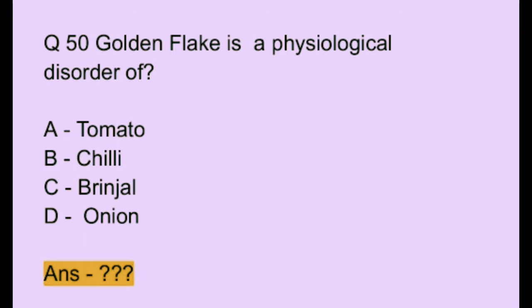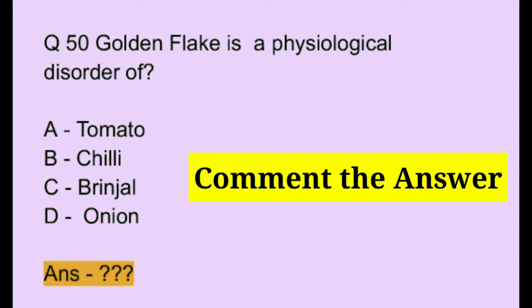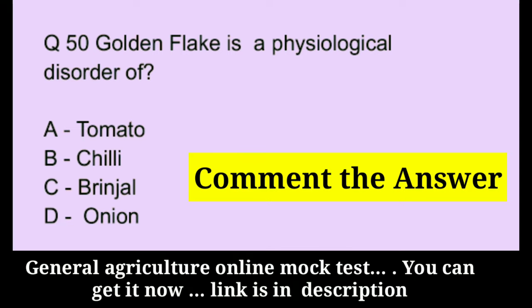Question number 50. Gold flake is a physiological disorder of: Option A: tomato. Option B: chili. Option C: brinjal. Option D: onion. The answer to this question — you have to comment down below. If you want agriculture general agriculture online mock test, you can get it now — link is in the description below. Thank you.